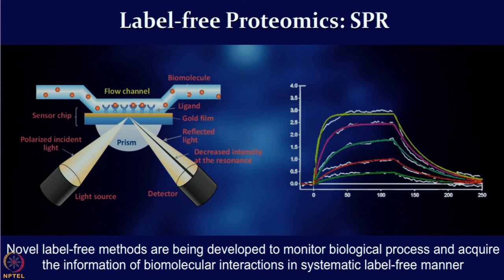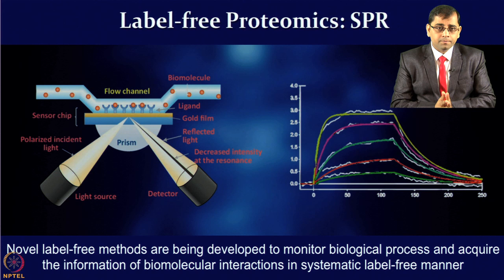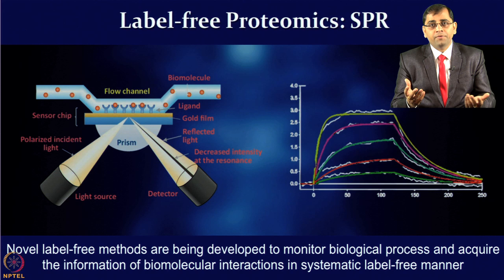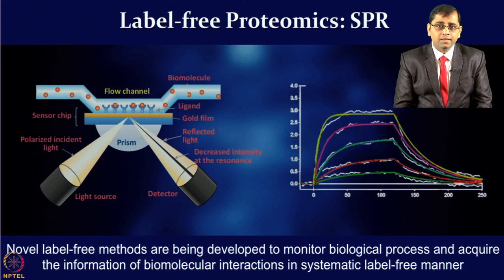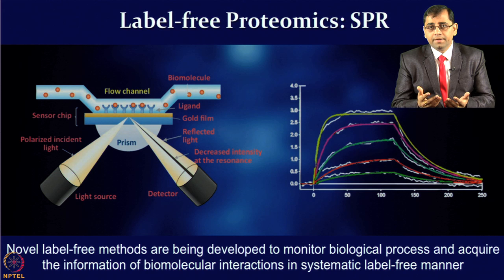In SPR, antibodies are printed on a gold slide. When you flow your protein of interest, the antigen binds to the correct antibody pair. Various other molecule types can be printed on the gold slide — for example, if a small molecule drug is flowing and a protein is binding to it, you are looking at protein-drug binding interactions. What you obtain is a sensorgram giving the association and dissociation rate, and you can calculate KD, the dissociation constant, and the kinetics of binding.